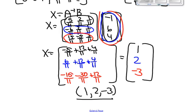Checking: 1 minus 2 is negative 1. 3 times 1 is 3, minus negative 3, that's plus 3, giving 6. And 5 times 2 is 10, plus 2 times negative 3 is negative 6, so 10 minus 6 is 4. So the solution x = 1, y = 2, z = -3 checks out in all three equations.